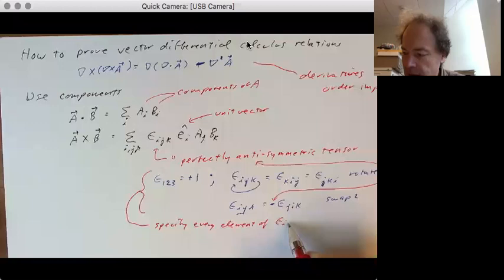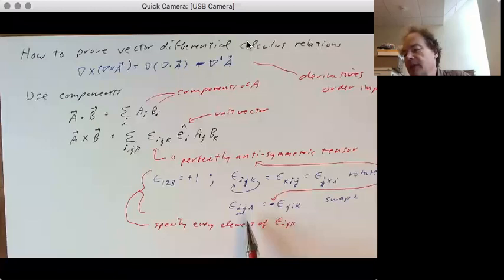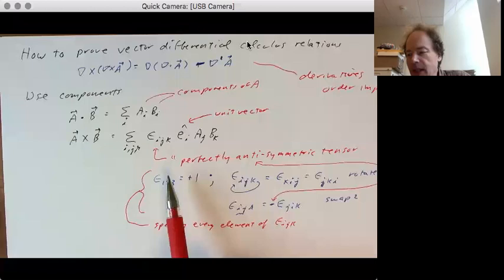Because I can start one, two, three, and I can rotate it around to get the others. And then I can swap two, and I can rotate those around, minus ones. And that tells me every element of epsilon i, j, k.